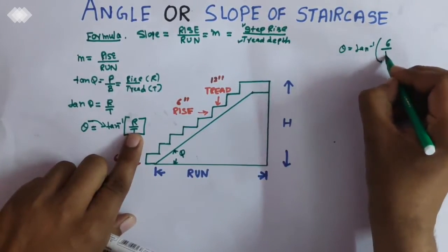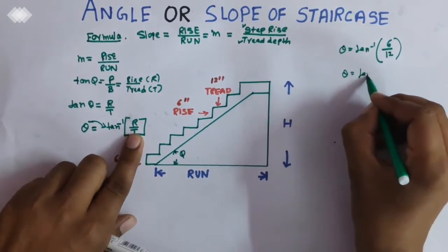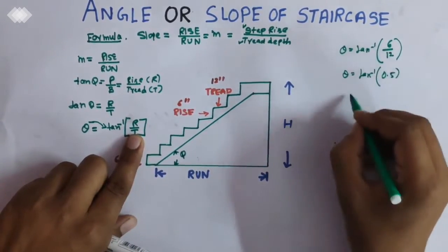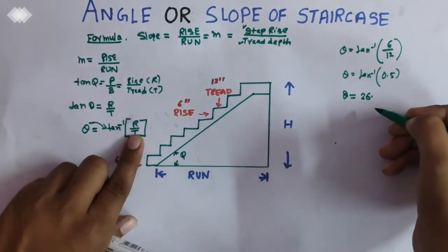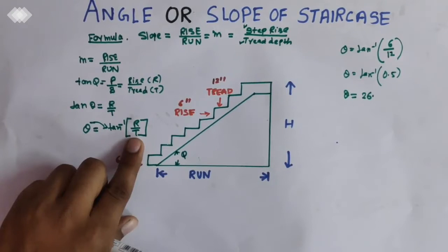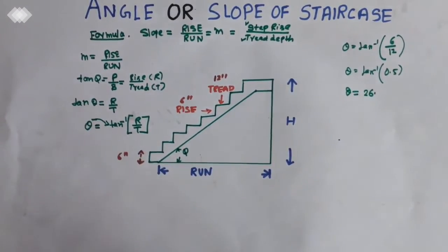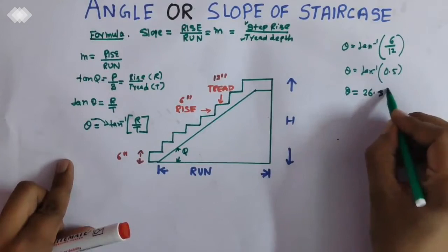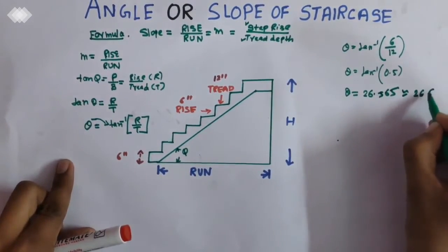So when we calculate the formula now we can put the values. The rise we are taking, tan inverse 0.5, so it comes out to be 26. Now let me calculate it. This comes out to be 26.565 equivalent to 26.57.